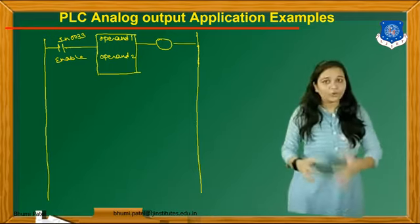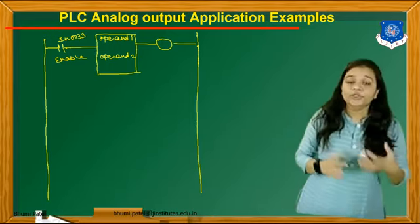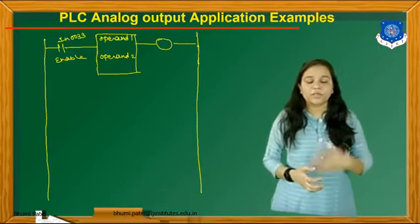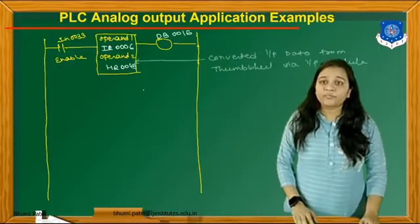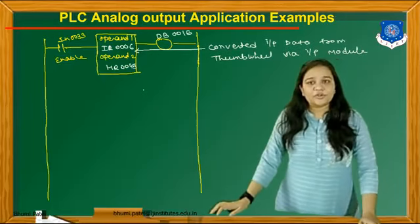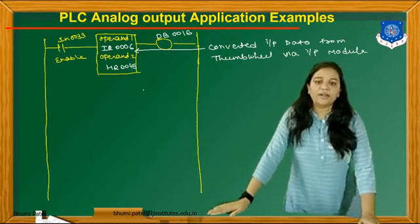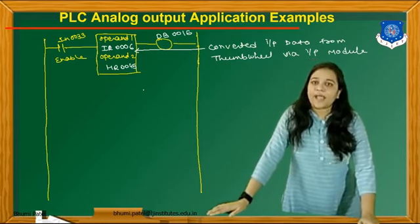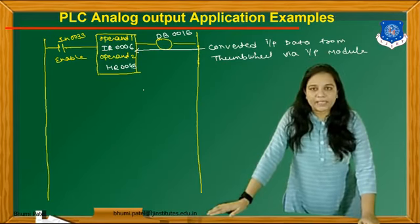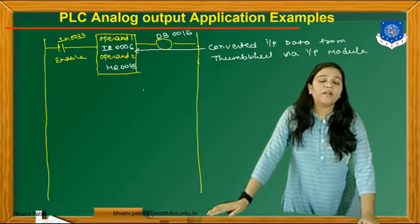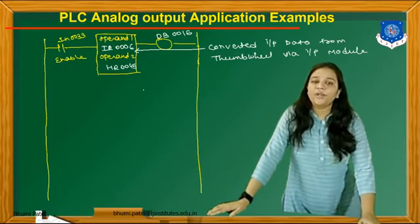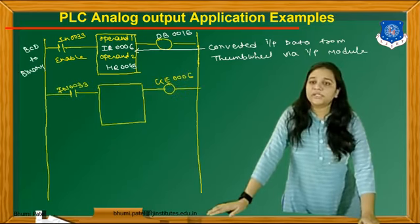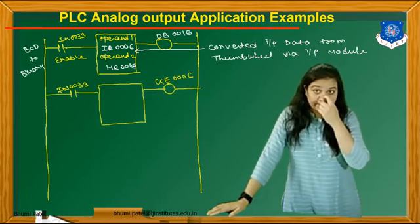To convert BCD to binary, we use input IN0033, which must be enabled. We take two operands: IR0006 and HR0045, and the command to convert BCD to binary is DB0060. This converts the input data from the thumbwheel via the input module. So the BCD to binary conversion is handled by this command.